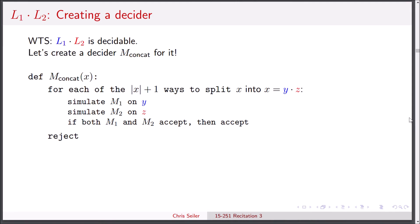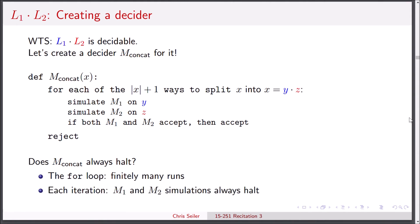Hopefully it should be clear why M concatenate is correct. So let's now try to show that M concatenate is a decider. Specifically, we need to check that M concatenate always halts. The for loop on the outside, we know that's only going to run a finite number of times because the length of x is finite. So now we just need to show that each iteration of the loop always halts. In particular, the simulate M1 on y and simulate M2 on z are the places where we have to consider. But we know that M1 and M2 are deciders, so they're always going to halt no matter what input they're given. So in conclusion, we know M concatenate always halts.